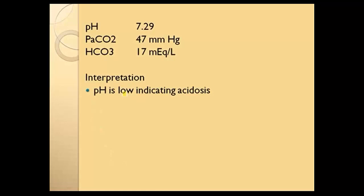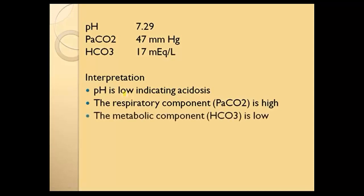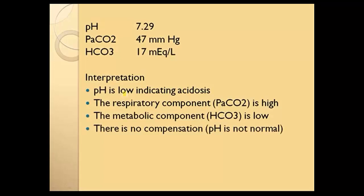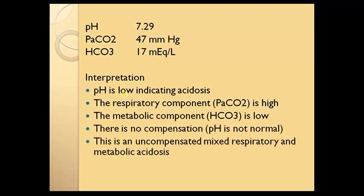The pH is low, indicating an acidosis. The respiratory component, the PaCO2, is high. The metabolic component, the bicarb, is low. There is no compensation; the pH is not normal. So this is an uncompensated, mixed respiratory and metabolic acidosis. Sometimes you can have a mixed acid-base disorder — in this slide, there are two reasons for acidosis: the CO2 is high and the bicarb is low. This patient is simultaneously experiencing two independent acid-base disorders.